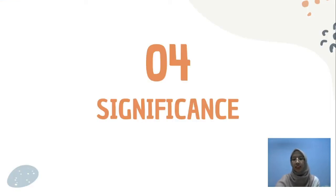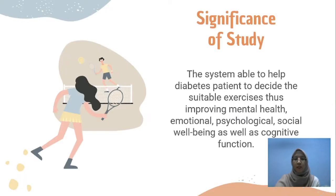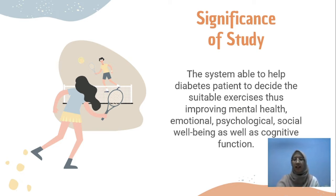The fourth section is significance of the study. The system can help individuals with diabetes to decide the suitable exercises they can do based on their health condition. The system can also benefit individuals by decreasing the risk of chronic diseases, and at the same time improve their mental health, emotional, psychological, social well-being, as well as cognitive function.